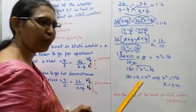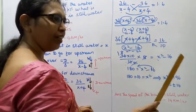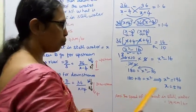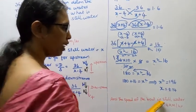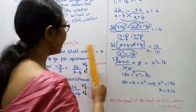We discard the negative value. Taking the positive side, the speed of the boat in still water is 14 kilometers per hour.